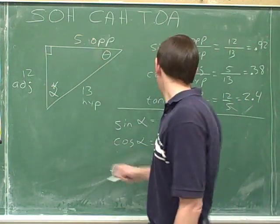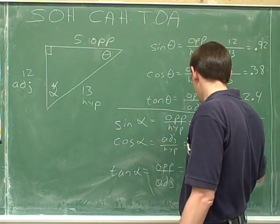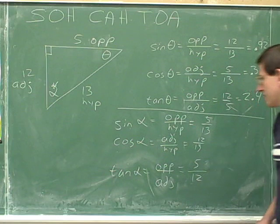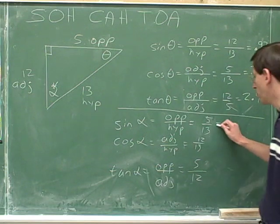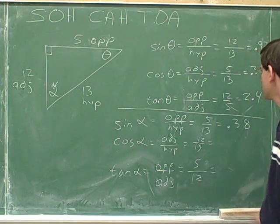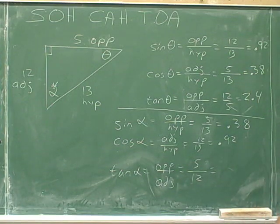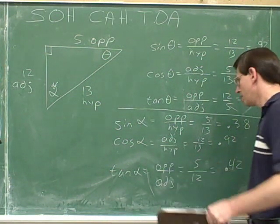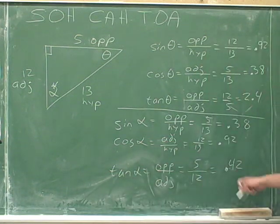Now the side that's opposite is the 5, and the hypotenuse is still 13. Adjacent is the 12, and the hypotenuse is 13. The opposite side is 5 and the adjacent side is 12. So the sine of alpha is 5/13, the cosine of alpha is 12/13, and the tangent of alpha is 5/12. Using a calculator: 5 divided by 13 is approximately 0.38, 12 divided by 13 is approximately 0.92, and 5 divided by 12 is approximately 0.42.